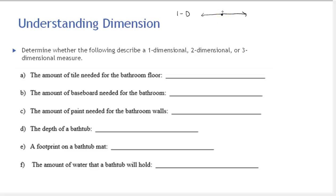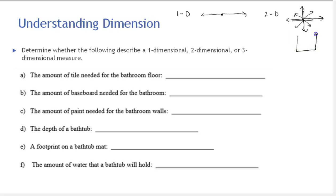In a two-dimensional world you can walk in two different dimensions. If this is you and you started here, you can walk right or left, up or down, or in any of these directions. The floor is an example of two dimensions — you can walk forward, backward, right, and left. I'm going to draw a little square for the floor to represent two dimensions.